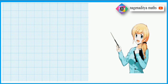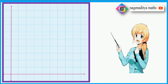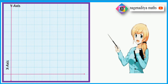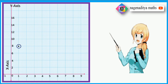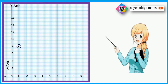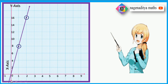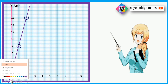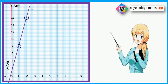This is the graph paper, this is the x-axis, and this is the y-axis. We have to plot the point 1 comma 8, and the next point is 2 comma 16. If you join these two points, you get the line y is equal to 8x. The line y is equal to 8x is of the form y is equal to mx, so it is always passing through the origin.